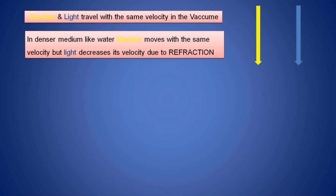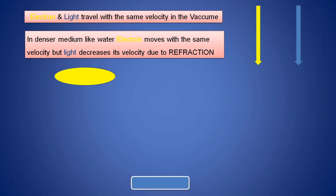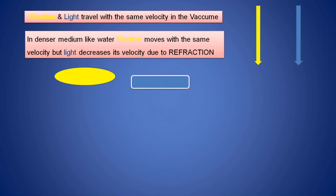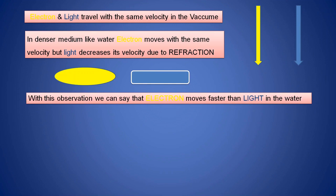If you compare the velocities of electron and light in water, which is a denser medium, the electron retains its velocity at 3 × 10⁸ meters per second, but light moves slowly due to refraction. With this observation, we can say that the electron moves faster than light in water.